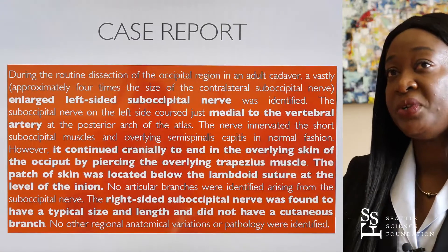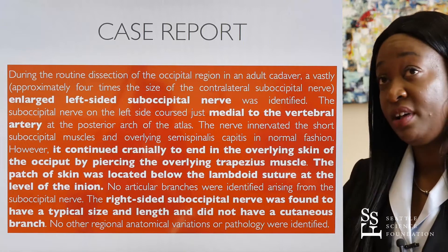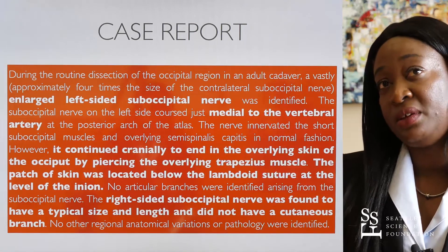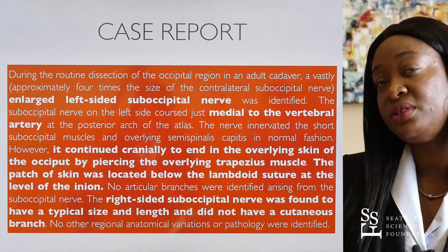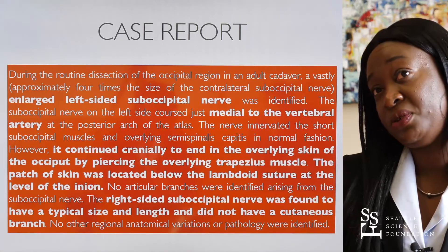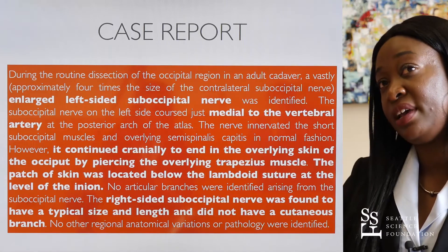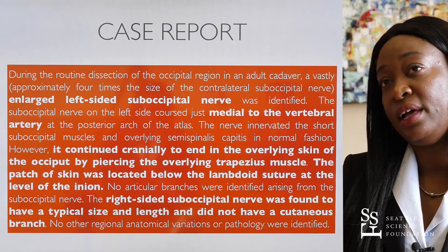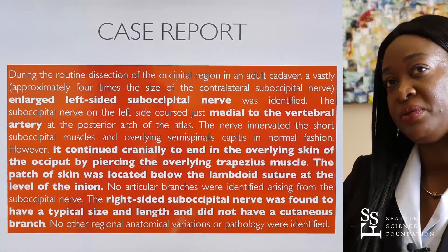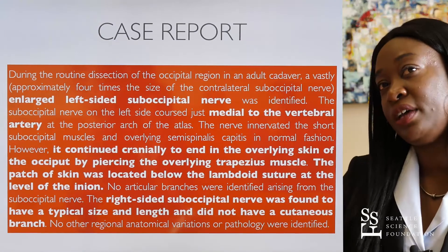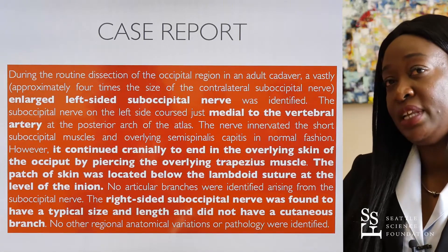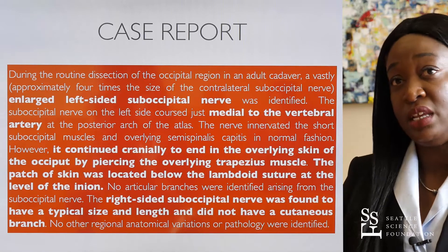For the case report, during routine dissection of the occipital region of an adult cadaver, both left-sided and right-sided suboccipital nerves were visualized. The left-sided suboccipital nerve was enlarged, approximately four times the size of the contralateral right suboccipital nerve. It coursed medial to the vertebral artery at the posterior arch of the atlas, then continued cranially by piercing the trapezius muscle, and was found to innervate a patch of skin located below the lambdoid suture at the level of the inion. No other branches were identified, and the right-sided suboccipital nerve had its typical size, morphology, and length with no cutaneous branches.